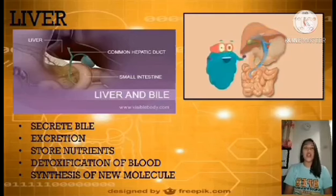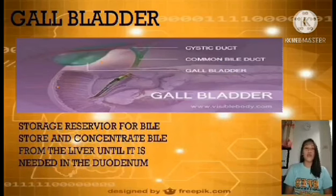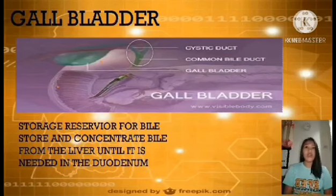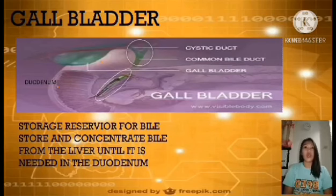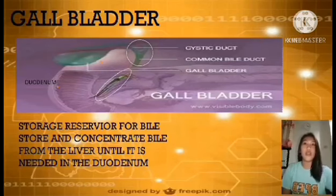Next is the gallbladder. If the liver secretes bile, the function of the gallbladder is to store bile. After bile leaves the liver, it reaches the gallbladder through the cystic duct. It stores and concentrates bile from the liver until it is needed in the duodenum or small intestine. If you notice the passageway — the white circle — the cystic duct merges with the hepatic duct of the liver to form a common bile duct, delivering bile to the small intestine.